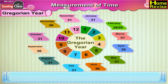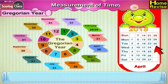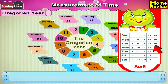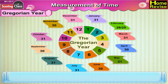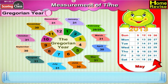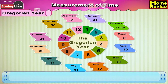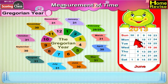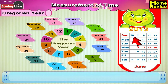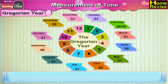The fourth month is April, which has 30 days. The fifth month is May, with 31 days. The sixth month is June, with 30 days. The seventh month is July, with 31 days.